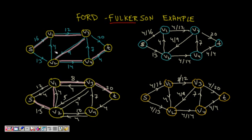The Ford-Fulkerson algorithm is very simple: while there is an augmenting path from source to destination, keep adding the residual capacity to your flow. So I have to reach from source to destination — I choose one path.